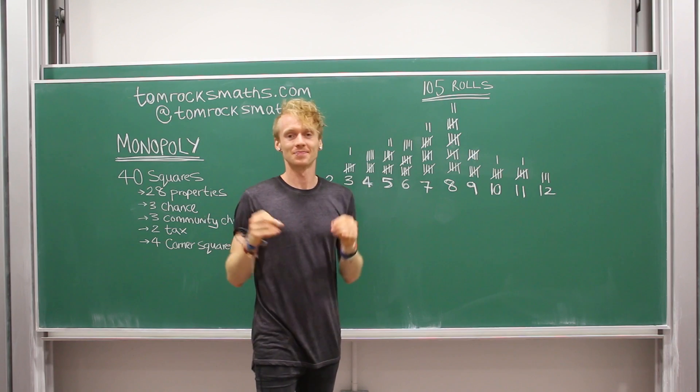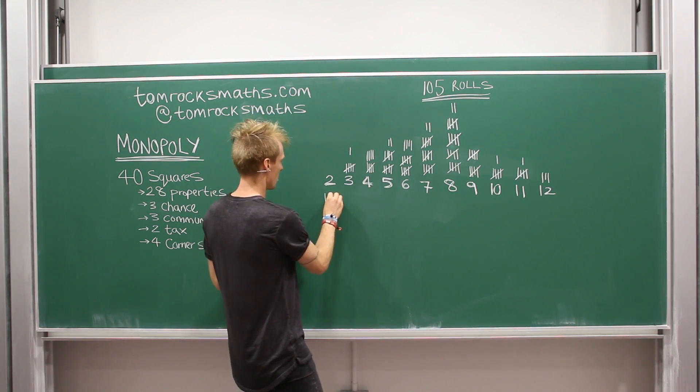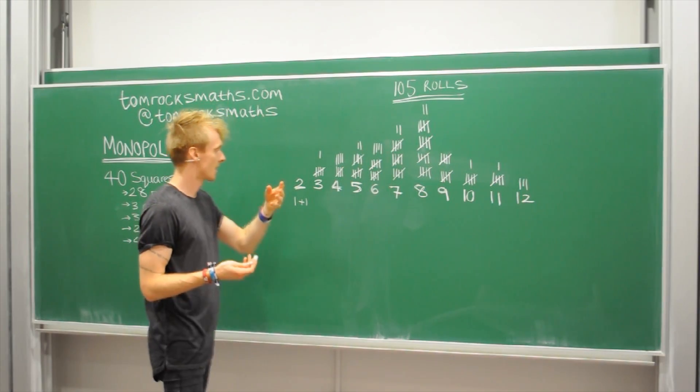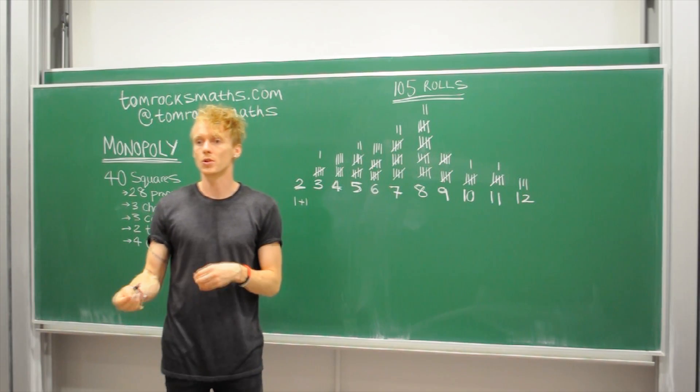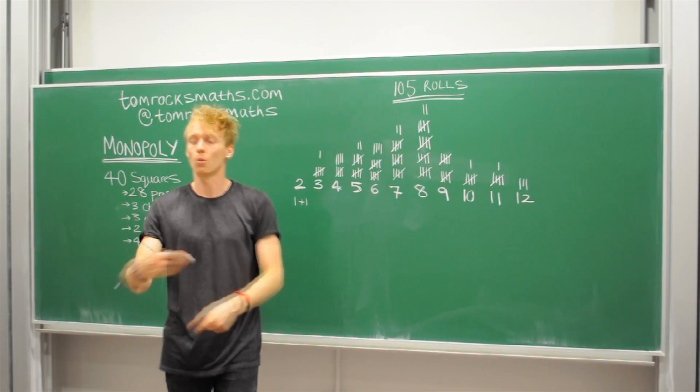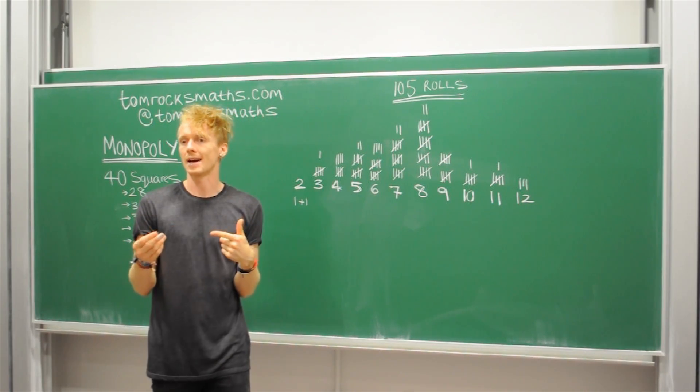So to get a two you need one plus one. So one plus one. Now to get a three you can get a one and a two or you could roll a two on dice one and a one on dice two. So you need a one and a two but there's two ways of doing that. What about four? Well we could have a two and a two.